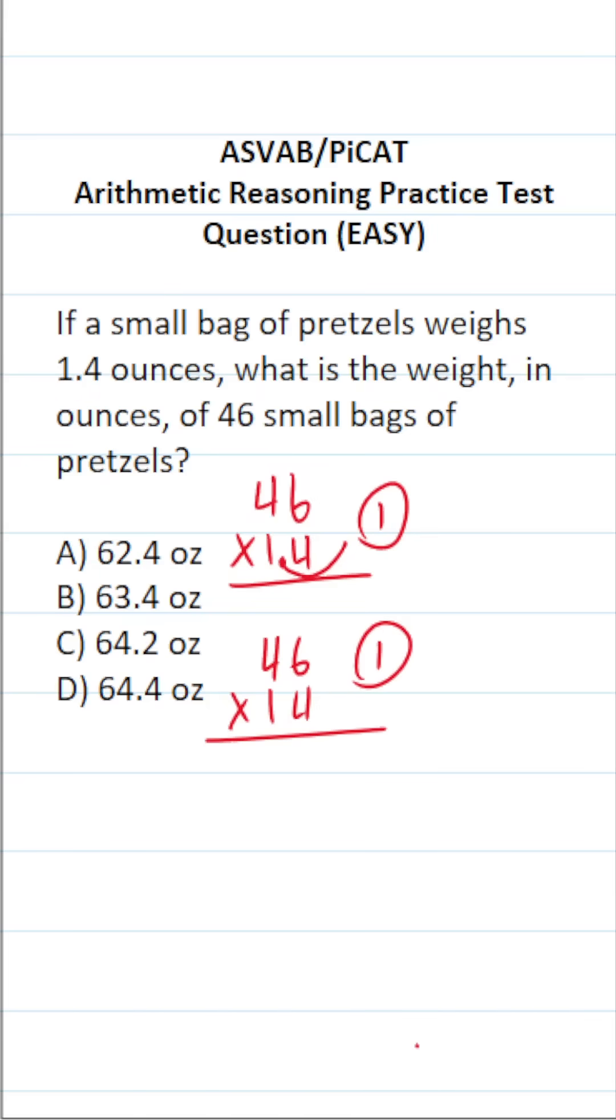6 times 4 is going to be 24. Bring down a 4, carry a 2. 4 times 4 is 16, plus 2 is 18.